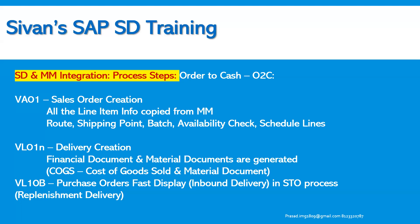Also, while doing the STO processes — stock transfer between two plants or two storage locations in the same company or different company codes, intercompany STO or intra-company STO — we do VL10B, that is purchase order or replenishment delivery display inbound delivery. This is where we integrate with MM consultants and the MM team.